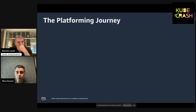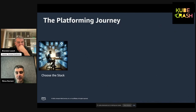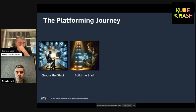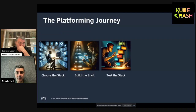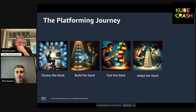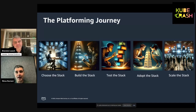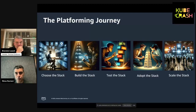We saw there is a consistency and a rhythm to the platform journey across all these organizations and every organization we work with at AWS. Users need to choose the stack they want to use to build their capability map. Then they need to build the stack, test the stack, and then promote the adoption of the stack within their own organization by the application teams. Eventually they have to scale the stack so it can grow to the scale of the organization. Canoe aims to provide a solution to each one of these problems.